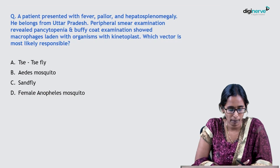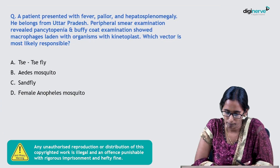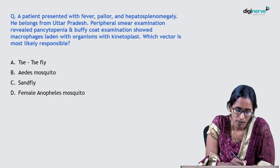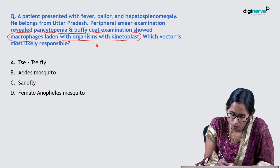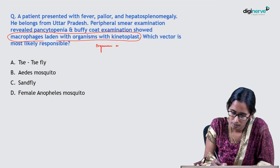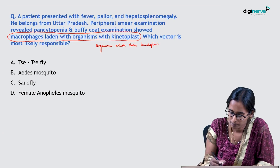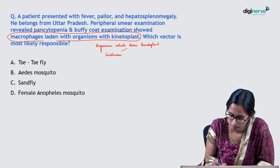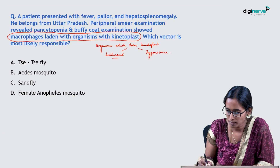In this class we'll be discussing the NEET PG 2021 question. A patient presented with fever, pallor, and hepatosplenomegaly. He belongs from Uttar Pradesh. Peripheral smear examination revealed pancytopenia and buffy coat examination showed macrophages laden with an organism with kinetoplast. Which vector is most likely responsible? The most important hint is macrophages laden with kinetoplast. The organisms which show kinetoplast are Leishmania and Trypanosoma.